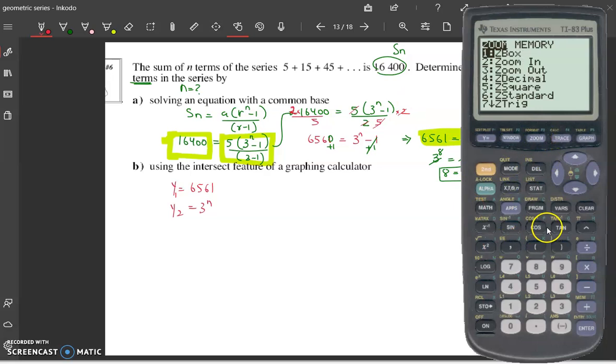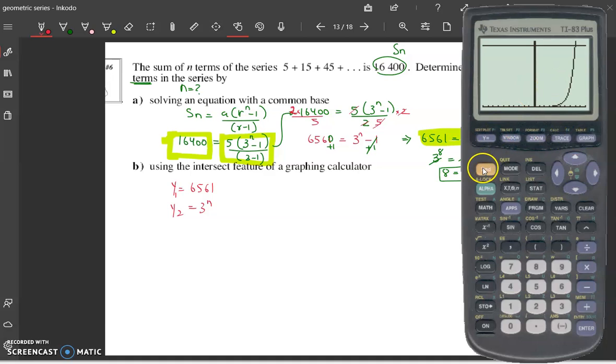Remember to start with zoom 6. We know we're not going to see the y1 here because it's so high. So let's go to our windows and then change our y maximum to be a number bigger than this, so maybe 7000, and graph it.